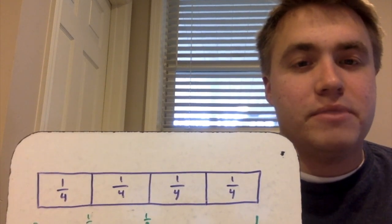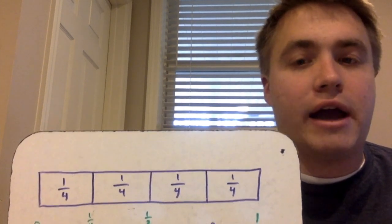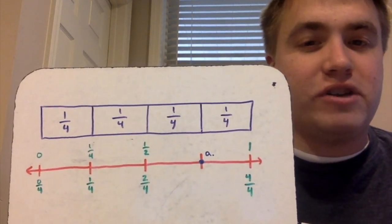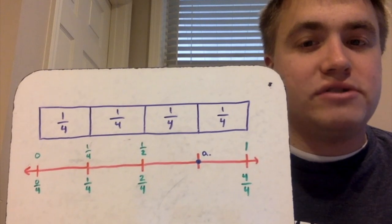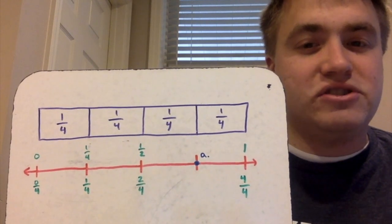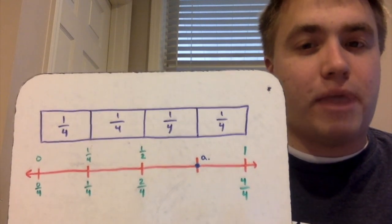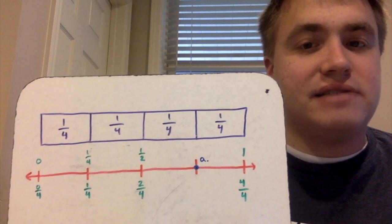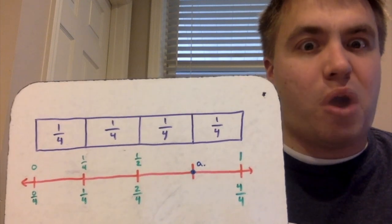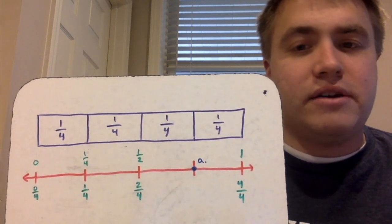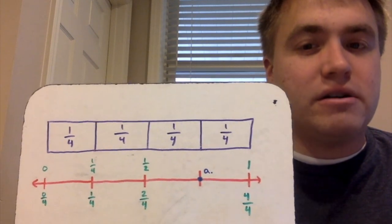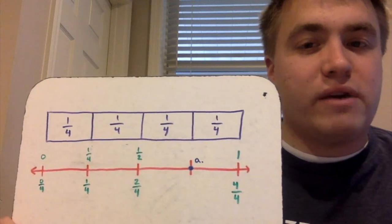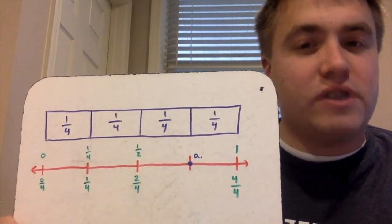But we can also do this on a number line. If I move this up a little bit here, I have a number line, and you should notice that my number line looks just like my bar model above it, except now I have lines instead of a bar, and I also have fractions written in there to represent where they would stand on the number line.